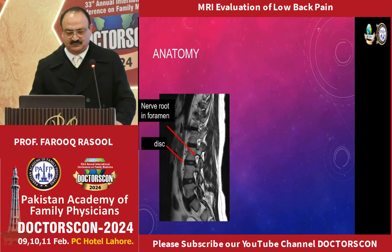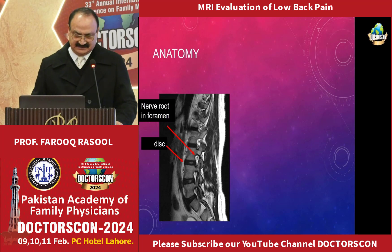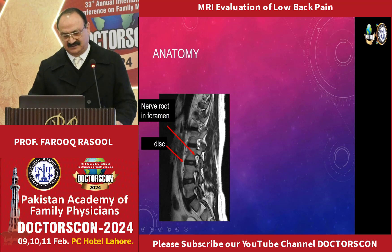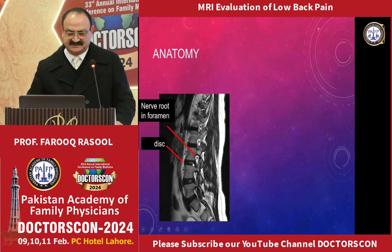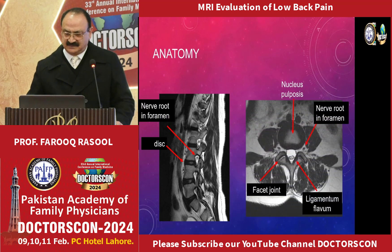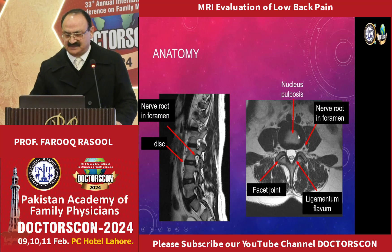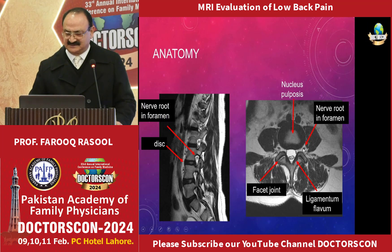We can see the nerve roots — they appear oval-shaped. In the center there is the exiting nerve, at the periphery you will find fat around the nerve, and vessels around the nerves. The disc is darker on T1-weighted image than the vertebral body. On the axial view, you can see the facet joint, disc space, nucleus pulposus, annulus fibrosus at the periphery, and the exiting nerves.